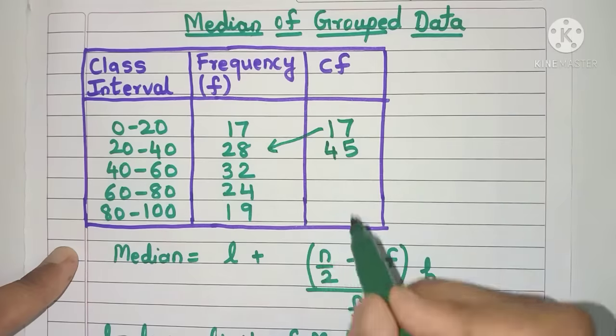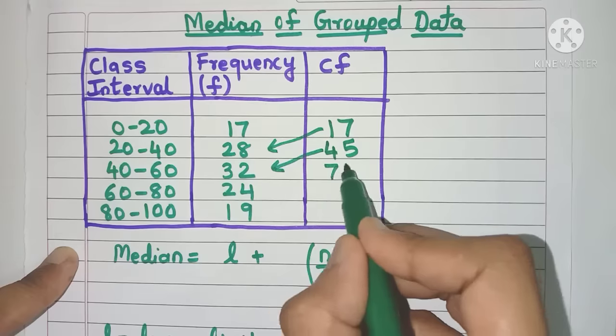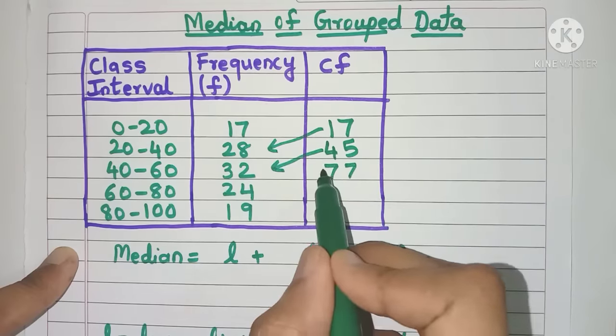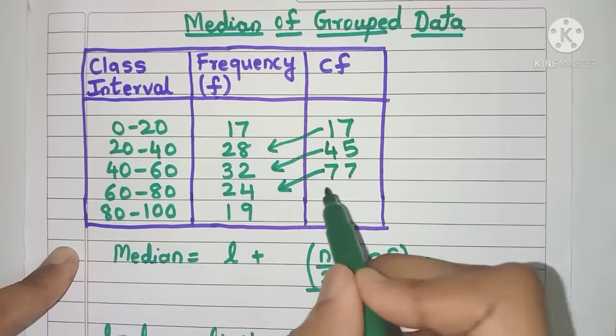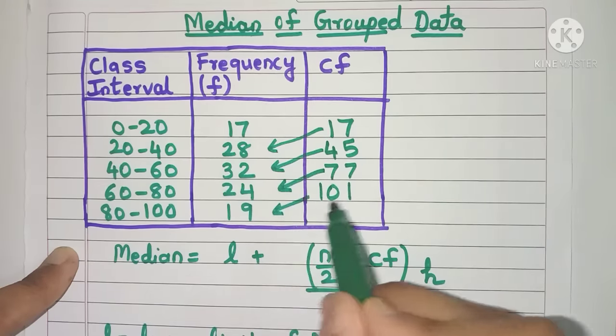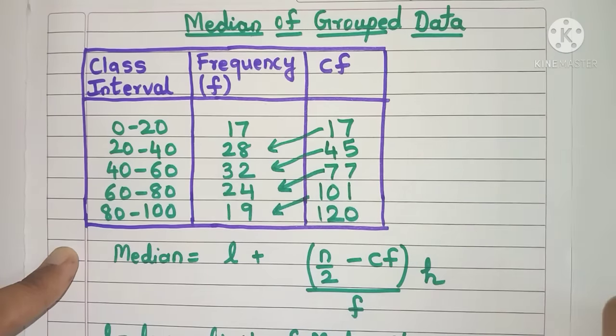This is the CF value. In the same way, 45 plus 32 gives 77. Now again for this CF, you take the previous CF and add it to 24, you'll get 101. Then again 101 plus 19 gives 120. So this is how you fill out the CF column.